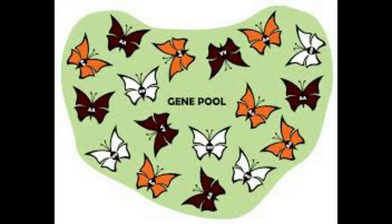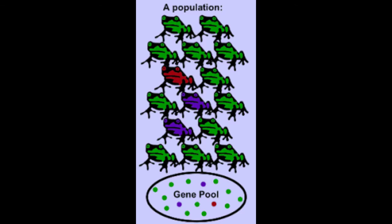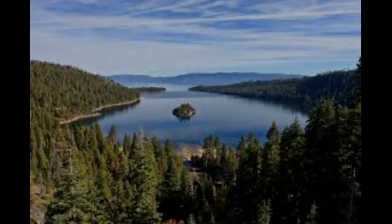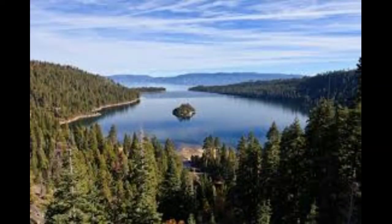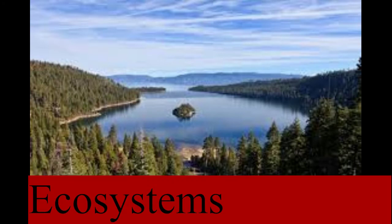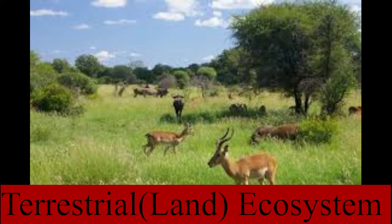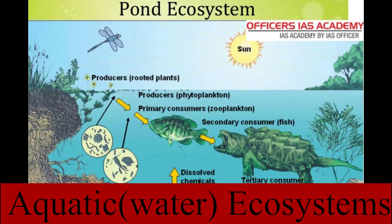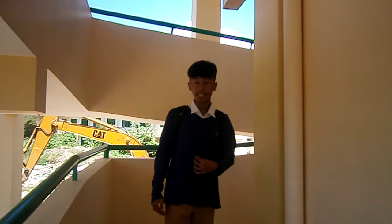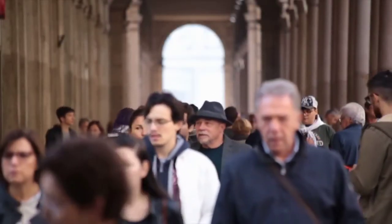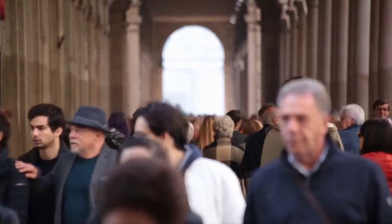The gene pool is the collection or total number of genes in a population. Next, we have ecosystem diversity, which deals with the variety of ecosystems that exist here on Earth. This includes both the variation in terrestrial or land ecosystems and aquatic or water ecosystems.